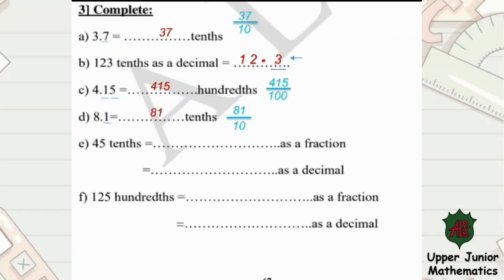45 tenths equals what as a fraction? The word 'tenth' means over 10, and the 45 is written up. This is how you write the number as a fraction. As a decimal, look at the fraction form — the denominator is 10, so you have one place after the point. Starting from the right side, write the 5, and then the 4 will be written as the whole number.